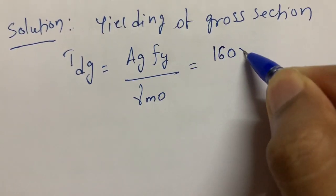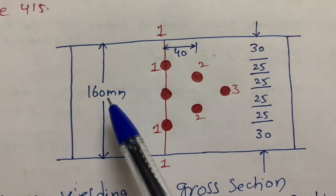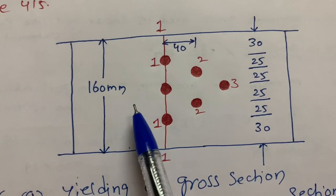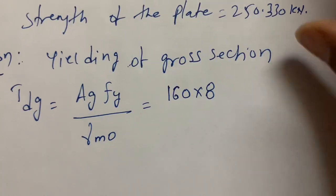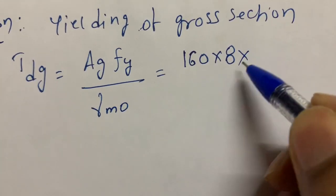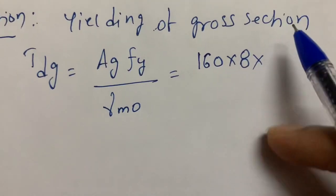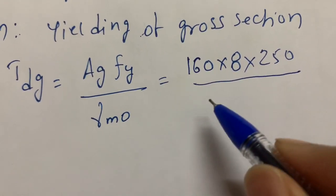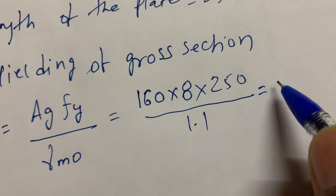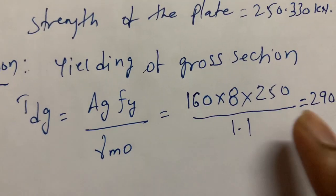The gross section area Ag = 160 × 8 = 1280 mm². fy is the yield stress; for Fe 415 steel plates, fy = 250 MPa, available in Table 1, page 14. γm0 is the partial safety factor = 1.1, available in Table 5, page 30. After calculating, Tdg = 290.909 kN.